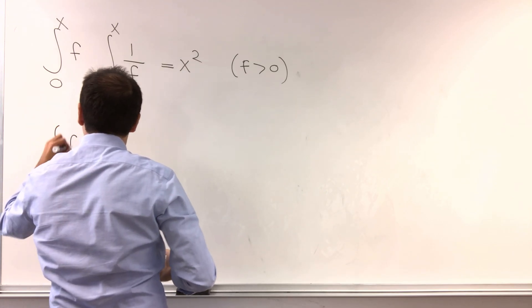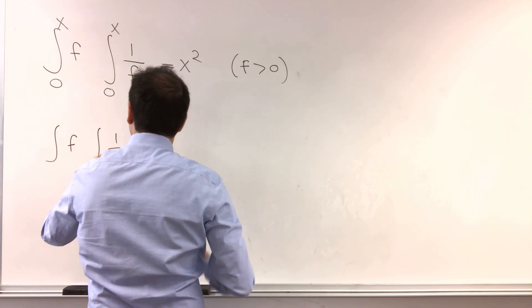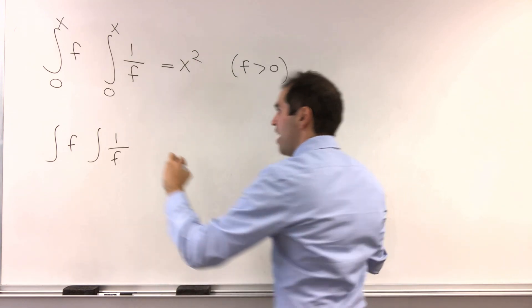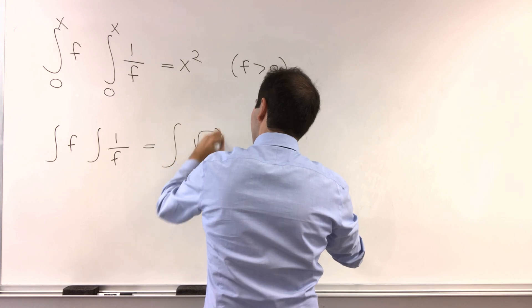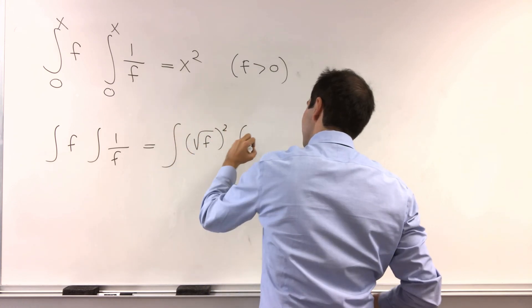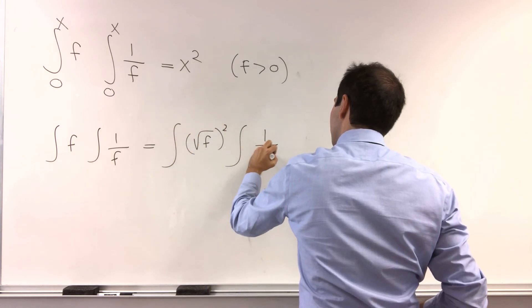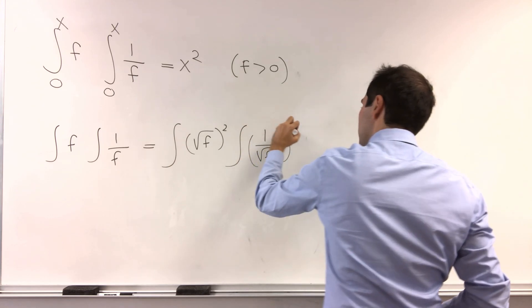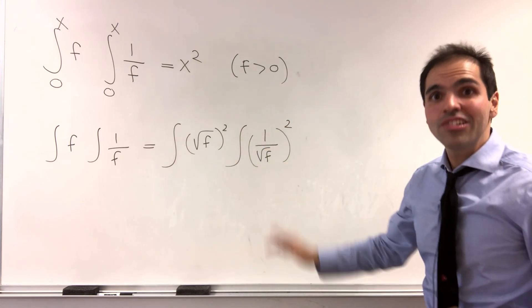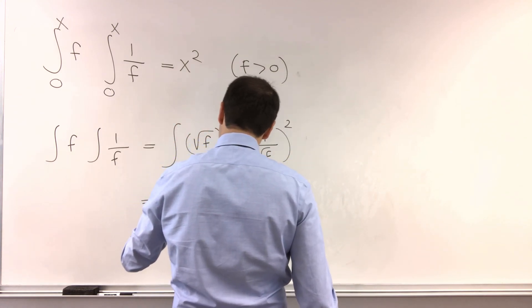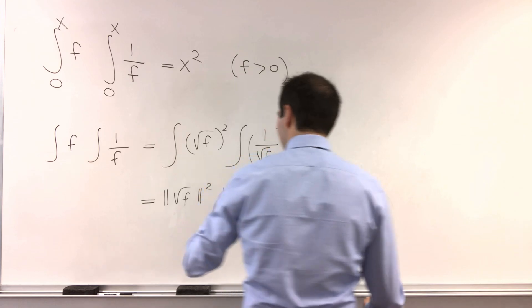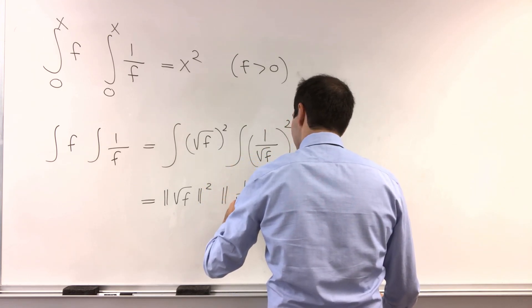Integral of f times integral of 1 over f, with the assumptions from 0 to x, that just becomes integral of square root of f squared times integral of 1 over square root of f squared. Well, that's literally the length of square root of f squared times the length of 1 over square root of f squared.